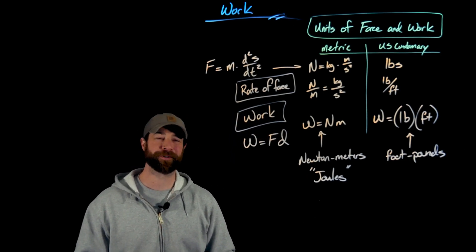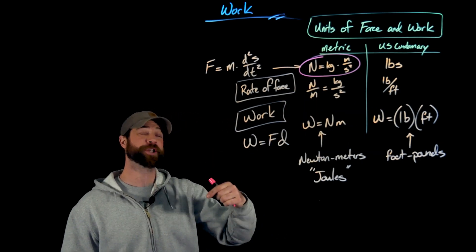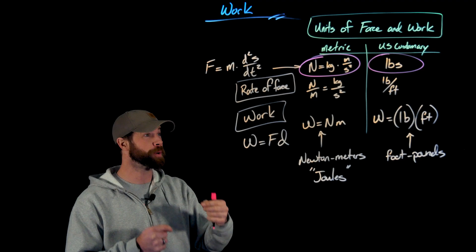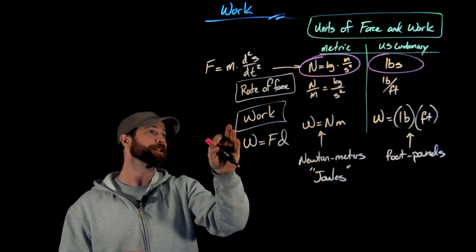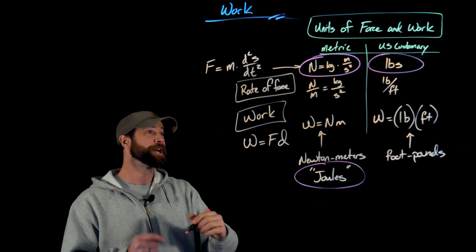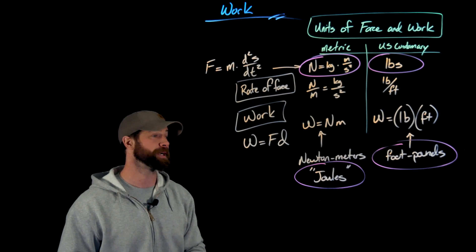So again, to summarize this: newtons is the base of force measurement in the metric system, pounds is the force measurement for U.S. customary units. And then for the concept of work, we compute newton meters or more commonly joules for the metric system, and we have foot-pounds for the U.S. customary system.